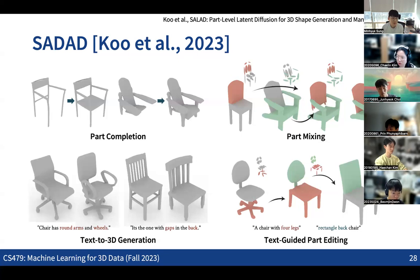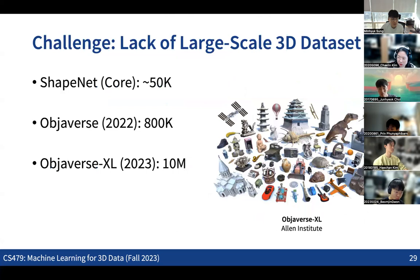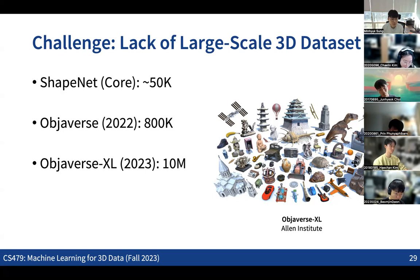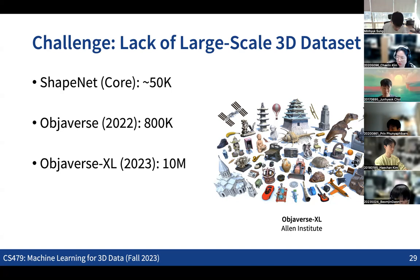One issue with 3D generation is collecting large-scale 3D datasets. For images we can see huge internet-scale public datasets with more than 5 billion examples. The scale of 3D datasets keeps increasing fast — the previous assignment had less than 50,000 shapes. Recently we started seeing much larger scale datasets.